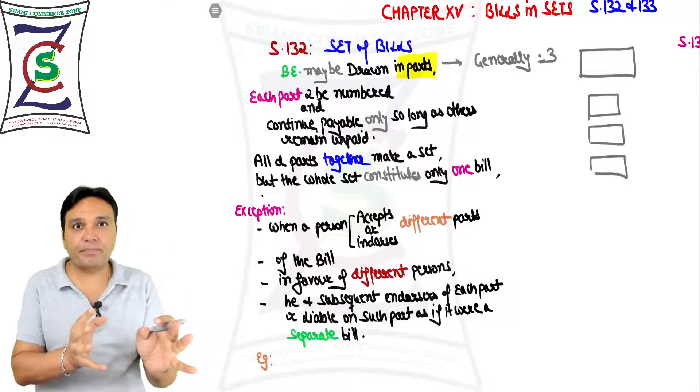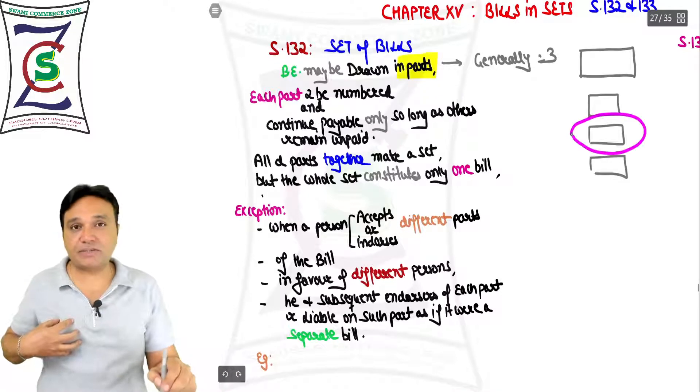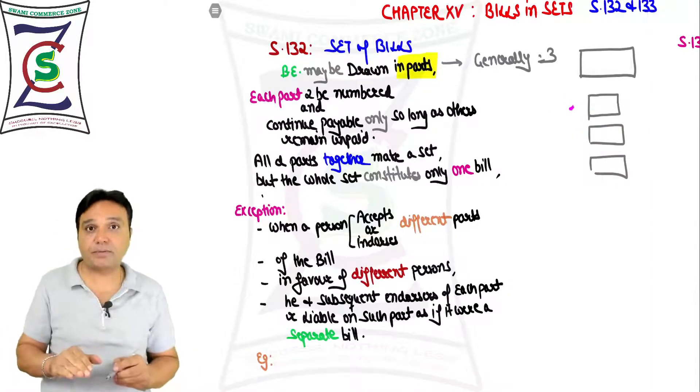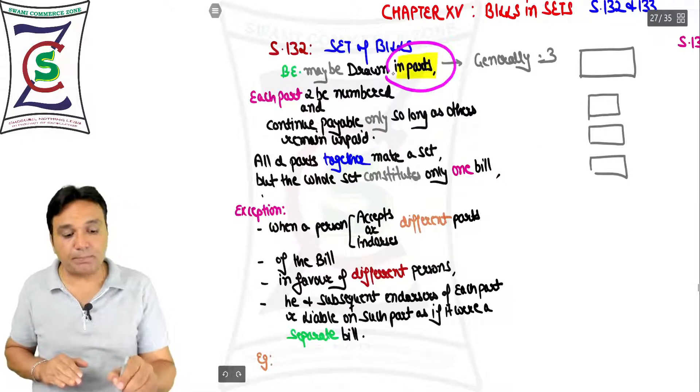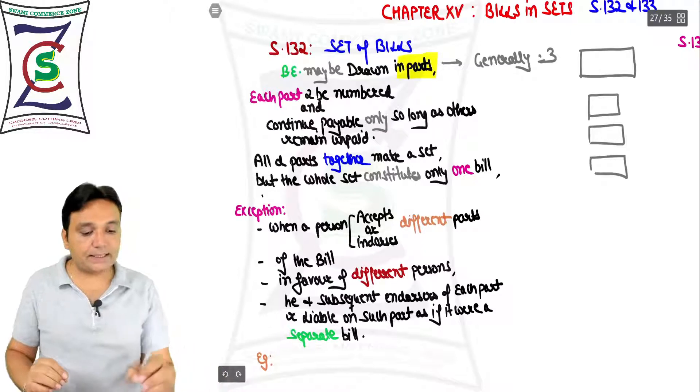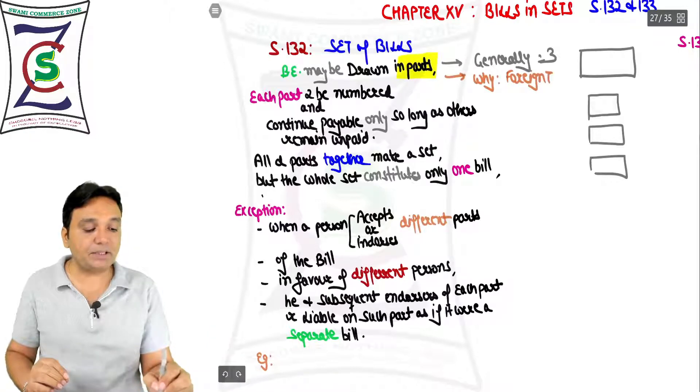You were aware of the fact the second part was going to come. Are you going to watch the second part first and the first part of the movie later? Not at all, you have to go in order. So when you are making a bill in parts, the question comes: why?